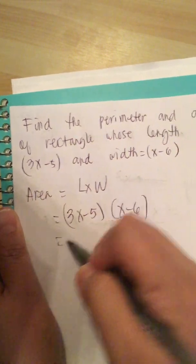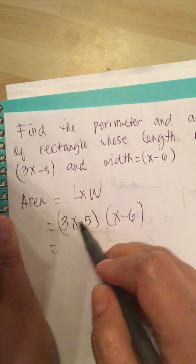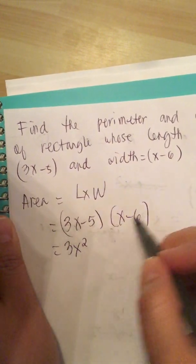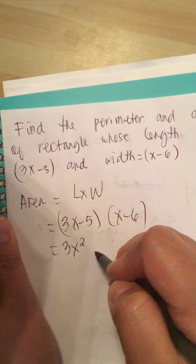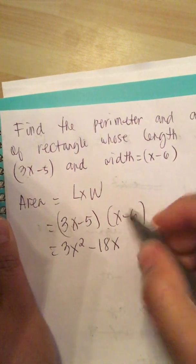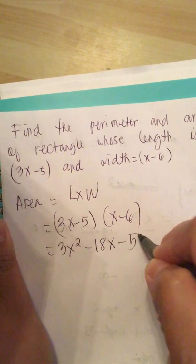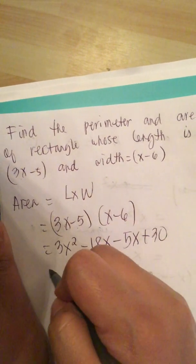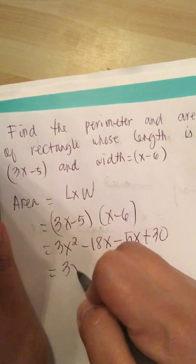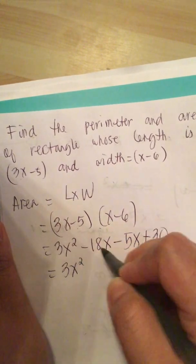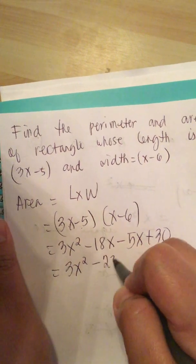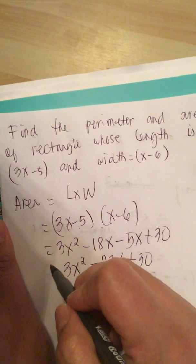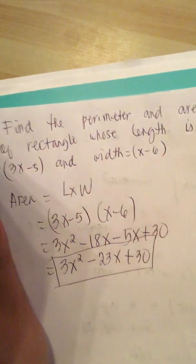Now we multiply this. 3x times x is 3x squared. 3x times negative 6 is minus 18x, and then minus 5x plus 30. So this is equal to 3x squared minus 23x plus 30. This is the area.